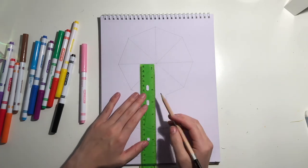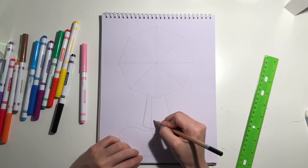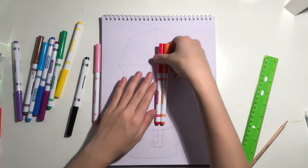Now draw a line down the jacket and three dots for the buttons. Next, we can start to add our color.